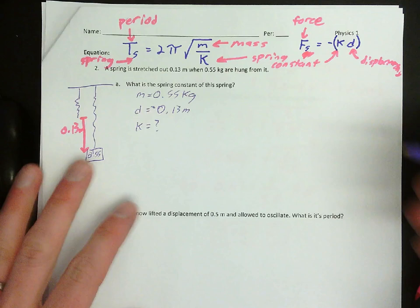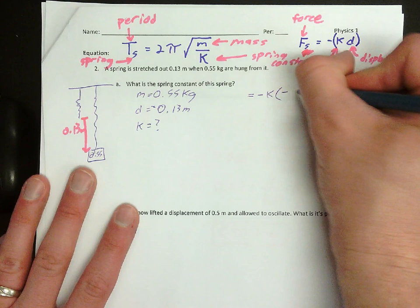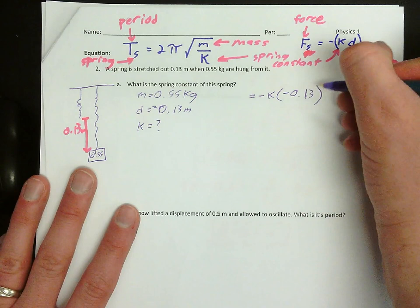So F, I don't know anything about F, so I'm going to leave a blank for now, equals negative KD. D is the displacement. Displacement is downward 0.13 meters. So that gives me that for starters.